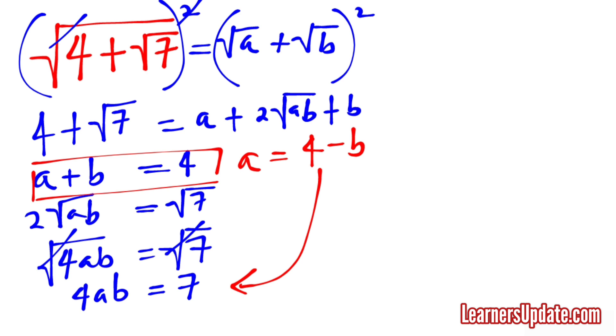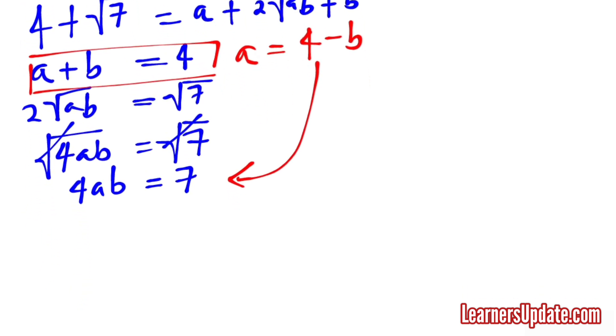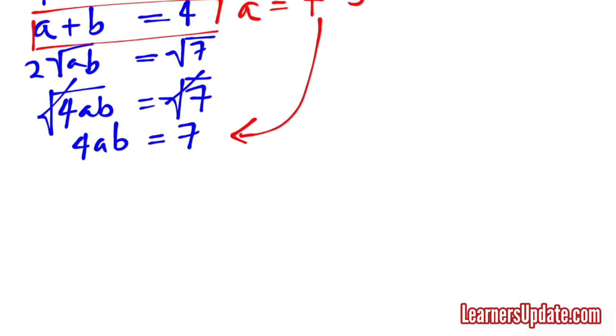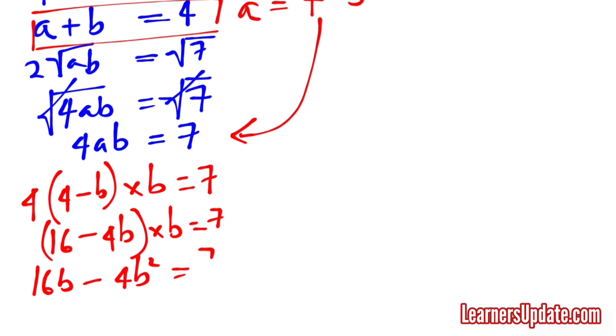By substituting, I have 4 times (4 minus B) times B equals 7, or 16 minus 4B times B equals 7. Simplifying, 16B minus 4B squared equals 7.